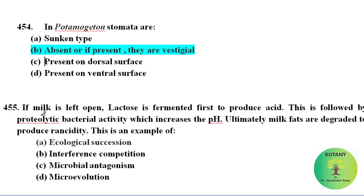If milk is left open, lactose is fermented first to produce acid. This is followed by proteolytic bacterial activity which increases the pH. Ultimately milk fats are degraded to produce rancidity. This is an example of ecological succession.